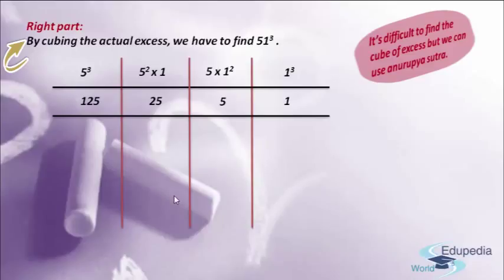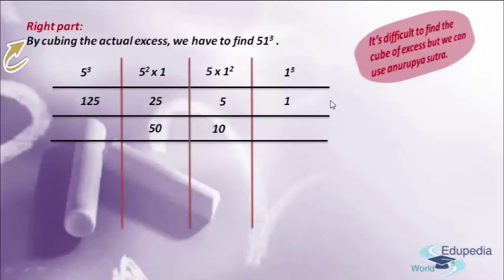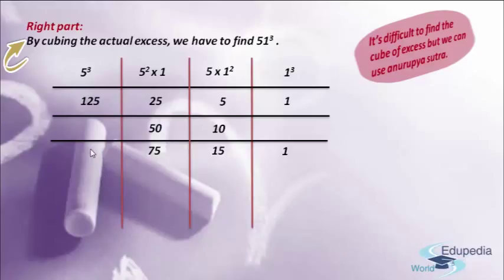Now we have to double the numbers in the second part and third part. If we double the number in the third part, that is 5, we get 10. And if we double the number in the second part, that is 25, we get 50. Now placing one more horizontal bar, you can see two rows — first row and second row — and we have to add them up. In the fourth part, there are no numbers to add, so we write 1 directly. In the third part, 5 and 10 add up to 15. In the second part, 25 and 50 add up to 75. In the first part, we have 125 with nothing to add, so we write 125 directly.